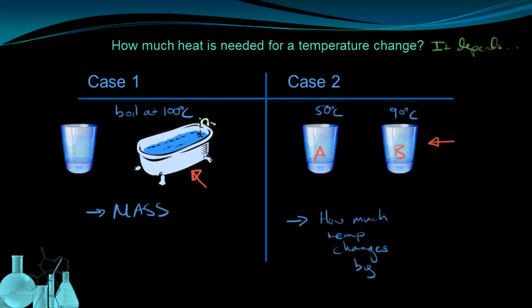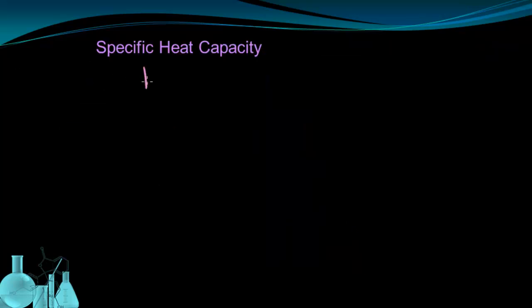So we've now related heat to mass, and also to the degree of temperature change. That means that heat, which is Q, is somehow related to the mass M and the degree, or amount, of temperature change, which we can represent as delta T, the change in temperature.